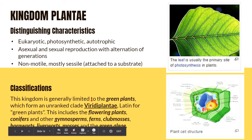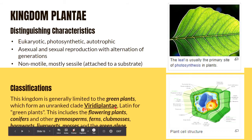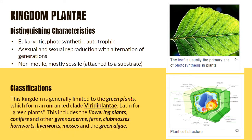The plant cell structure still has the basic organelles but with the addition of chloroplast and cell wall. Kingdom Plantae is generally limited to green plants, which is part of viridiplantae — Latin for green plants. This includes flowering plants, conifers and other gymnosperms, ferns, clubmosses, hornworts, liverworts, mosses, and the green algae.